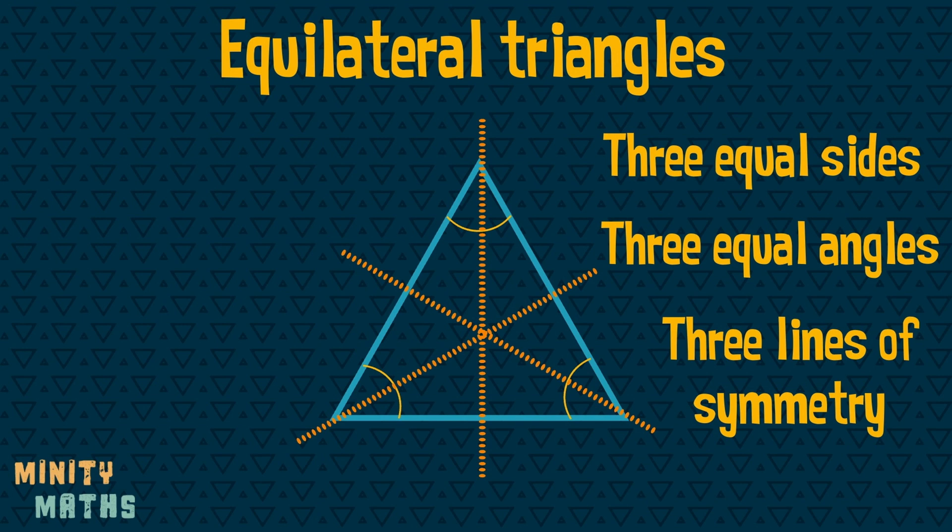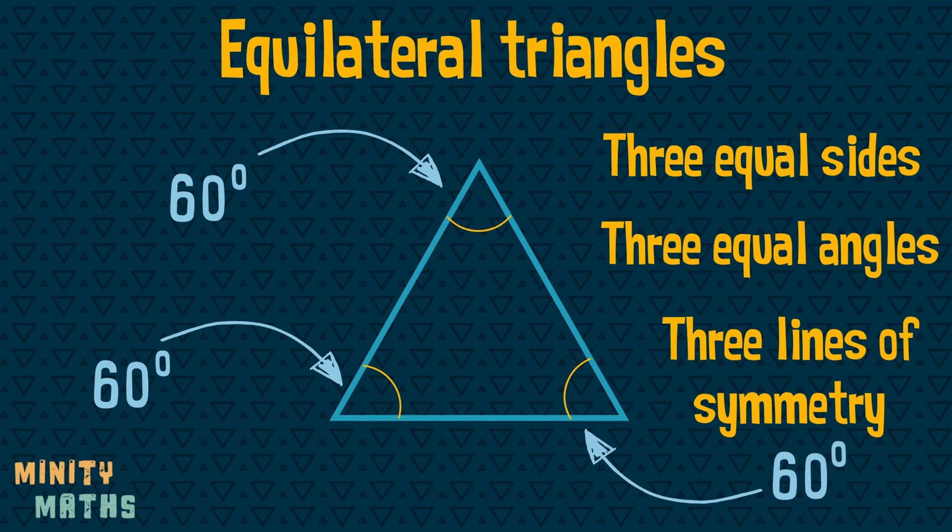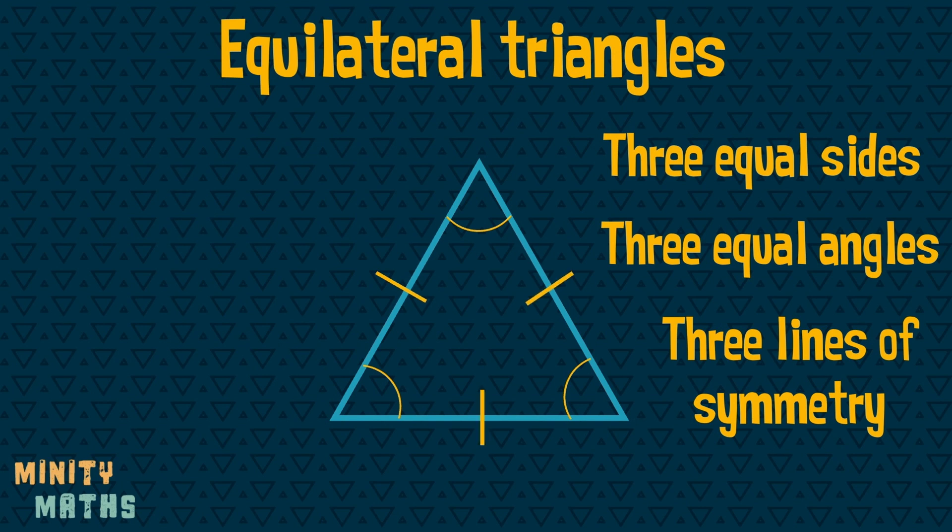Because all angles in a triangle add up to 180 degrees, and there are three angles of equal size, each angle will be equal to 60 degrees. We can show the fact that all sides are equal by using these little lines to mark each side.